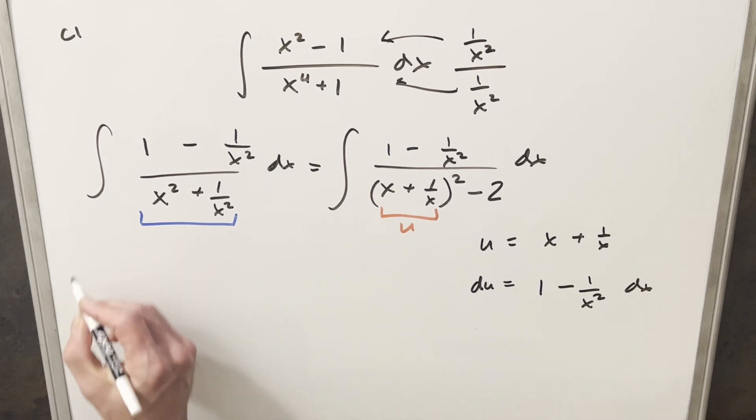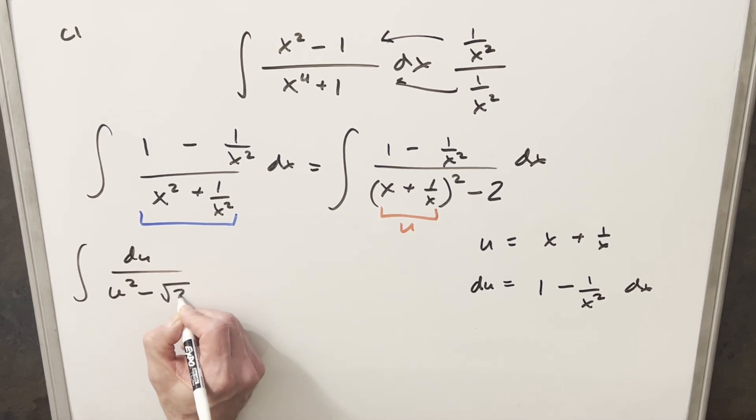Okay, so now we'll just go ahead with this substitution. So the whole numerator is going to be du. And then we're going to have this as u squared minus 2. But I'm actually going to write this as square root of 2 squared. And I'm setting it up like this because for our integral in this form, we just have a formula to finish this off.